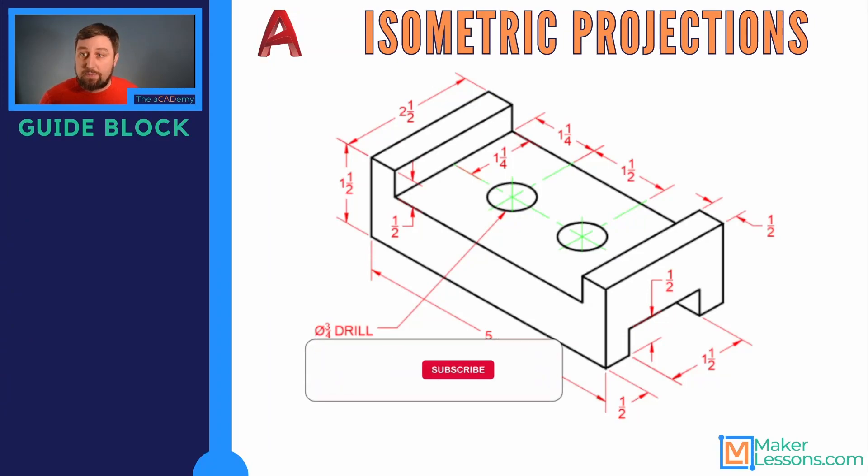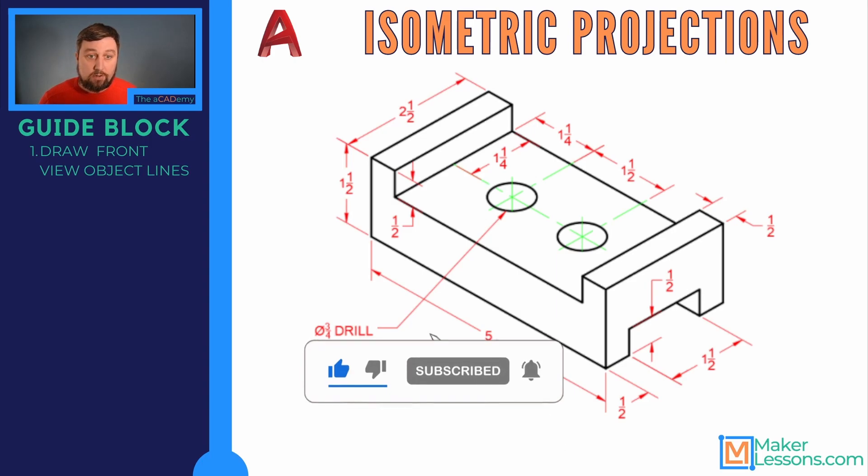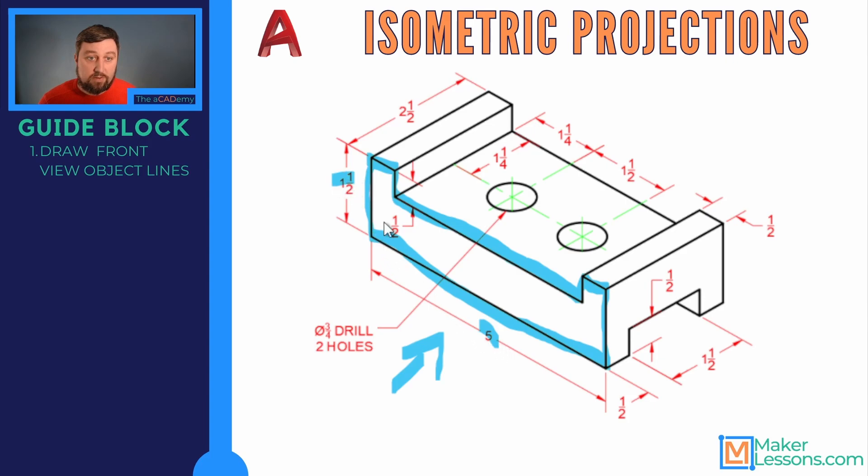We're going to start with our very same step that we started when we did our orthographic projection. We're going to start by drawing our front view object lines. And what are our front view object lines? Well, if this is our front view, these here are still the same object lines that we want to actually produce in AutoCAD. You'll see that we have our same dimensions as before. We have five inch and a half. Going over in this direction, we have a half an inch, down a half an inch, and same thing, four half, half, inch and a half.